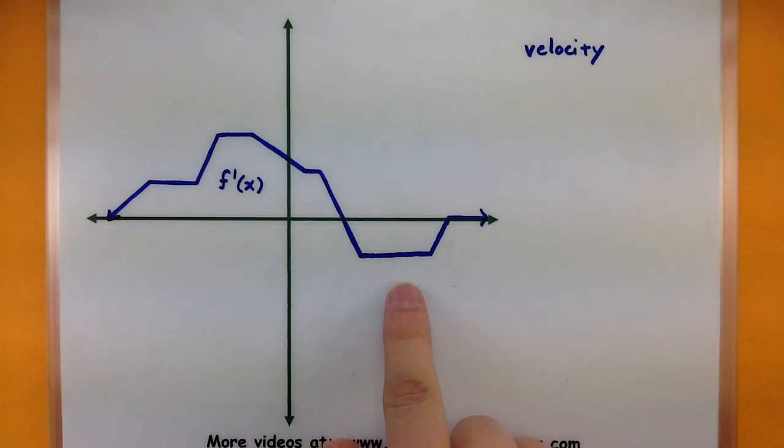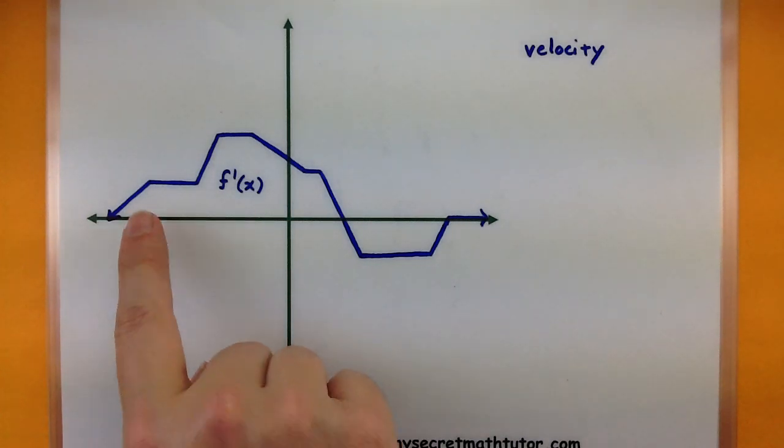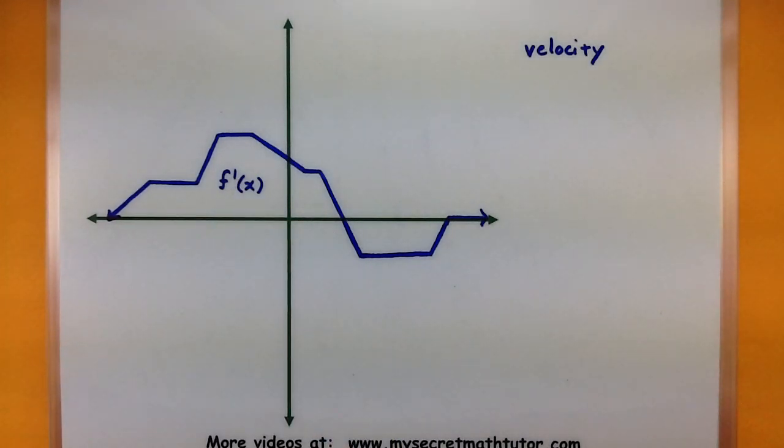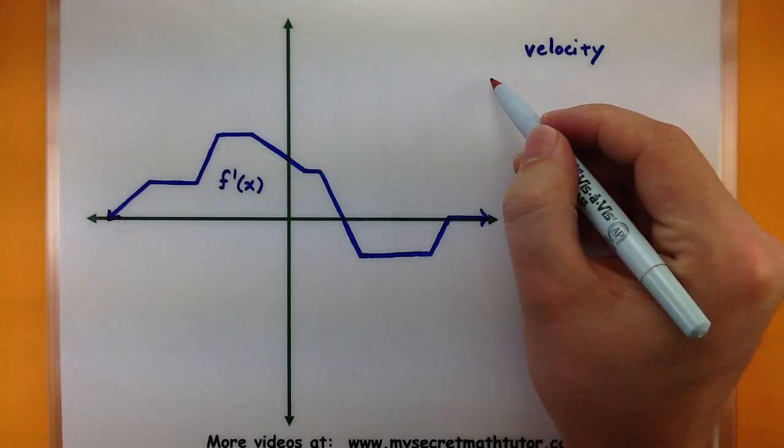So this is the velocity of some other function. We want to know what these spots correspond to. So the big thing to keep in mind is that this is talking about velocity. So anytime you see yourself in the positive region,